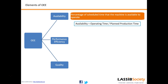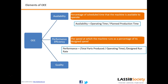Now we talk about Performance. Performance efficiency relates to how you have been working during your available time. Suppose six hours was your planned production time and the total parts produced were 600. Six hundred divided by six hours gives us 100 parts per hour. The design rate for the machine was 200 parts per hour. So 100 divided by 200 gives 50% — our machine's performance efficiency is 50%.